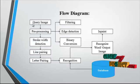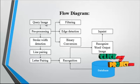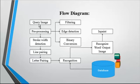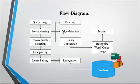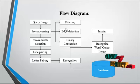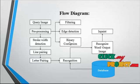Now we discuss about the flow diagram. First, the query image is taken from the dataset. Then pre-processing is undertaken after the query image is selected. In the pre-processing, we consider three major things: first is filtering, second is edge detection, and third is binary conversion.